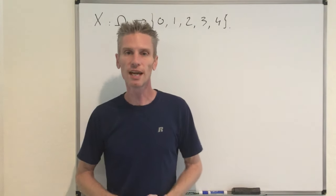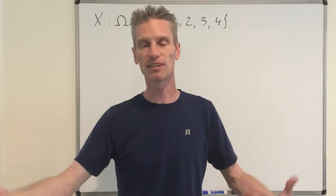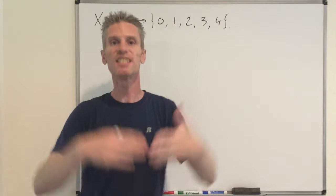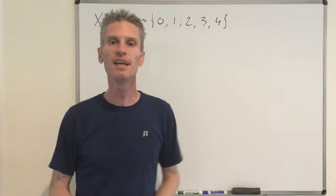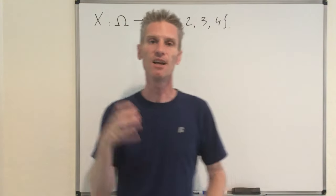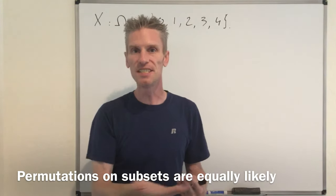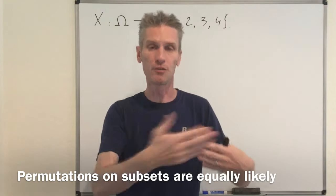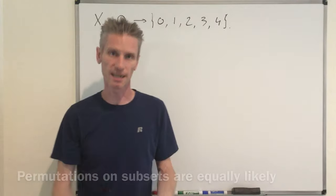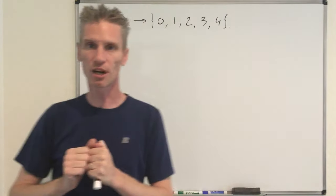More generally, if you look at a set of n numbers with n factorial possible permutations that are equally likely, and if you look at any possible subset, then all possible orderings of the numbers in that subset are also going to be equally likely. So that's what we are going to use to solve the problem.